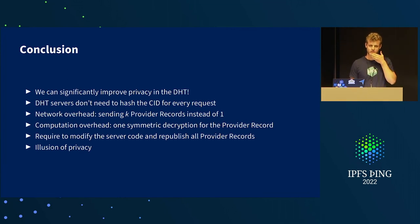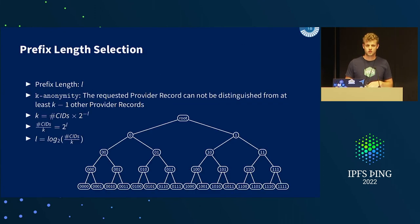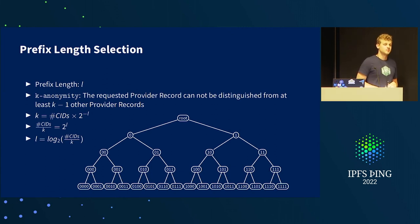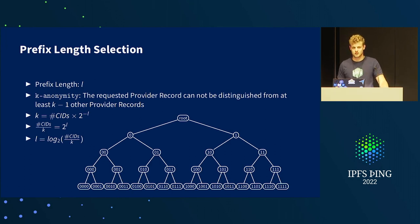A question from the audience: the prefixing approach is reminiscent of a locality-sensitive hash. Was a locality-sensitive hash — like SimHash — considered as an alternative way of hiding information about what you're looking for? It might help against the dictionary attack, since looking things up by prefix could be matched easily, whereas a different strategy might avoid that.